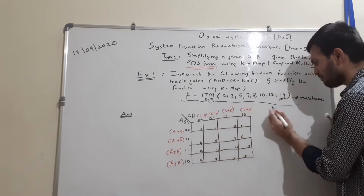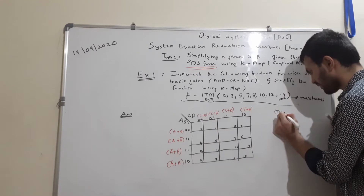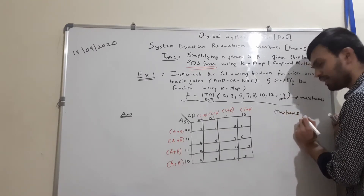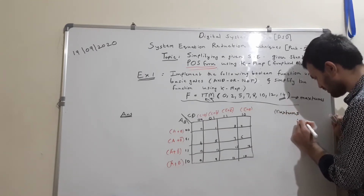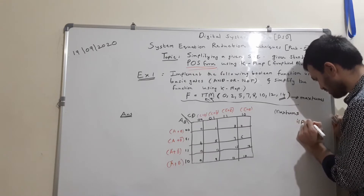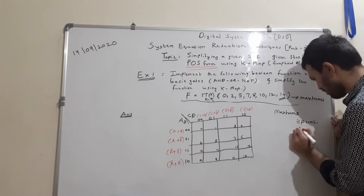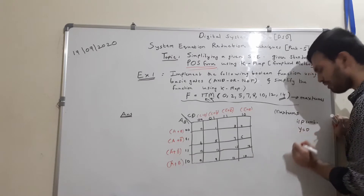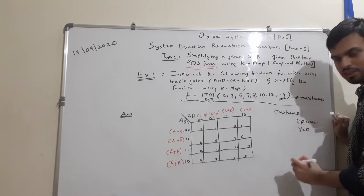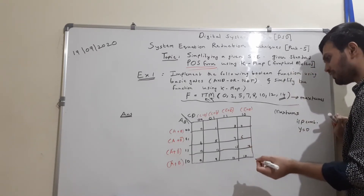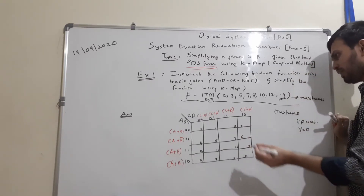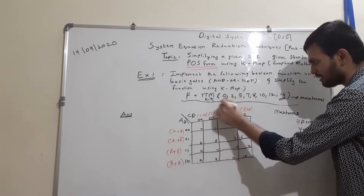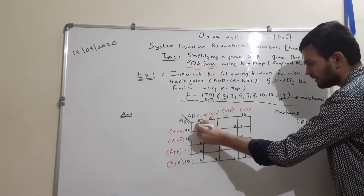Now, what is a max term? Max terms are the input combinations that produce logic 0 at the output. So we will fill all the corresponding cells with 0. Max term 0 gets a 0.